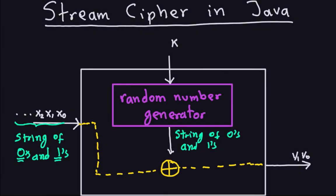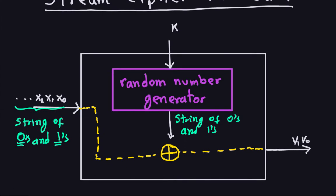Hello and welcome again. In this series of videos we will talk about how to implement the stream cipher using Java. Let's recall what the stream cipher was: you put a sequence of zeros and ones into a block along with a key. The key causes a random number generator to produce a sequence of zeros and ones, which is then XORed with the incoming sequence, producing the output.